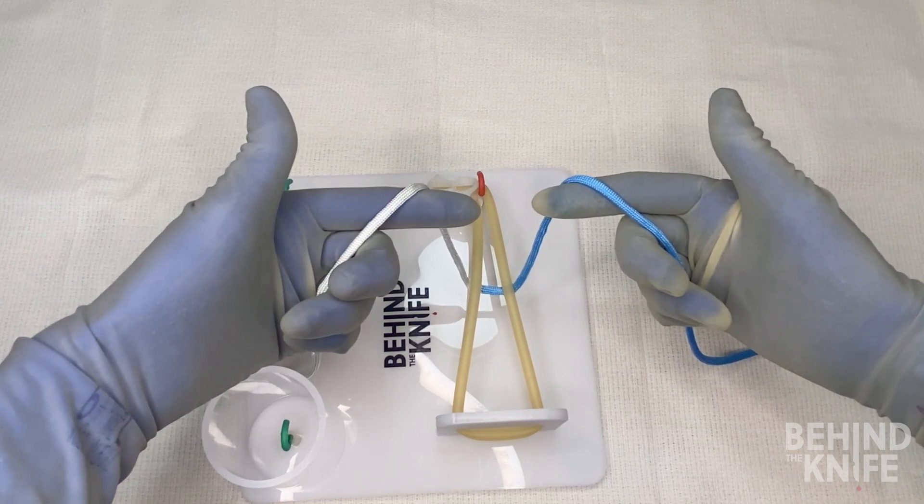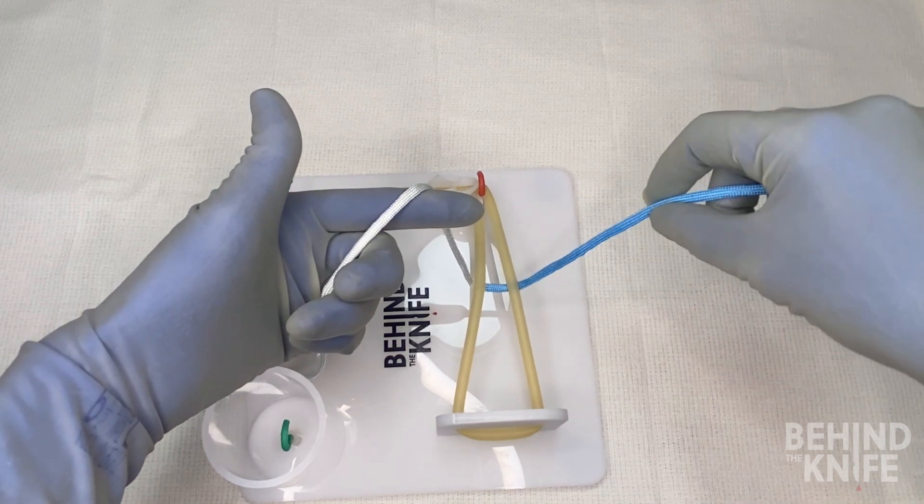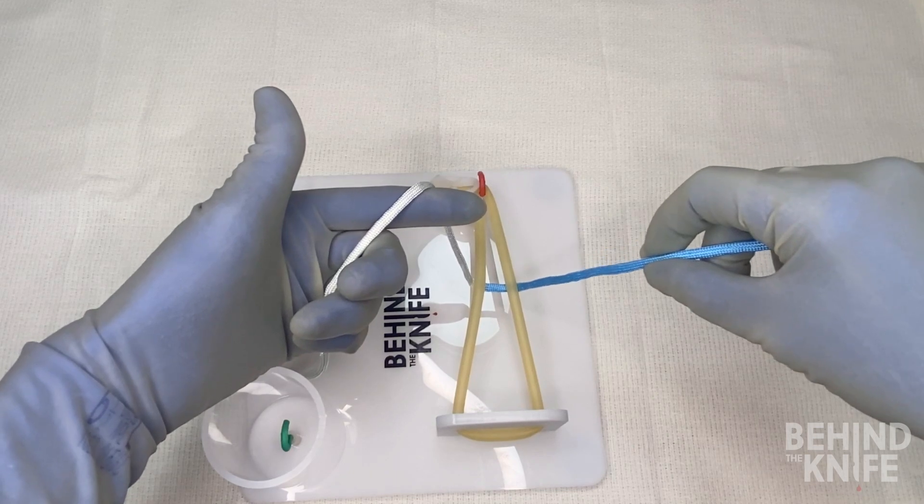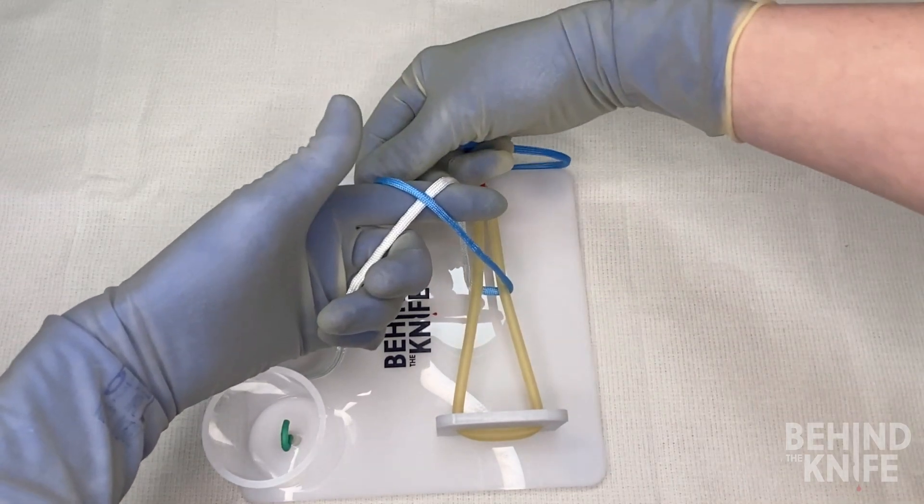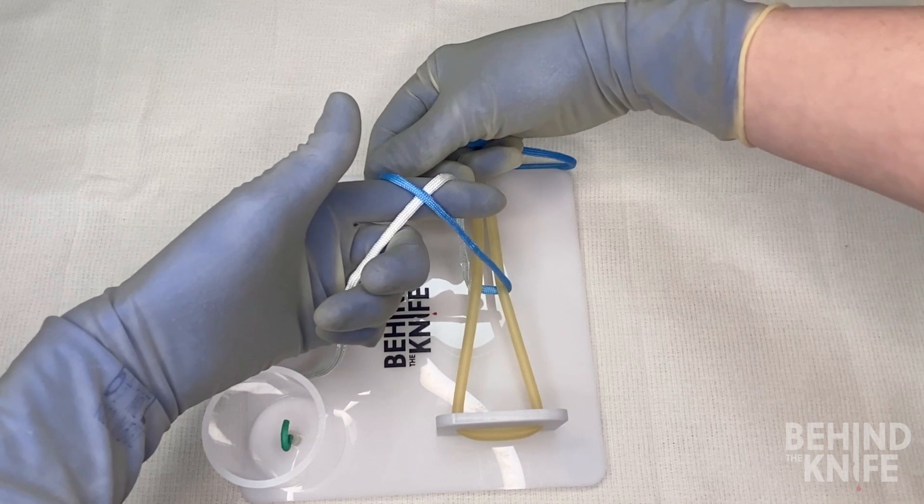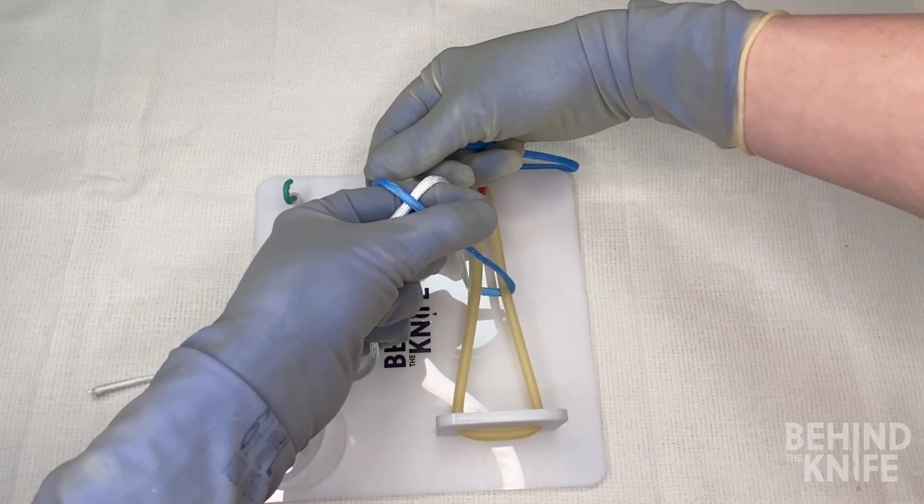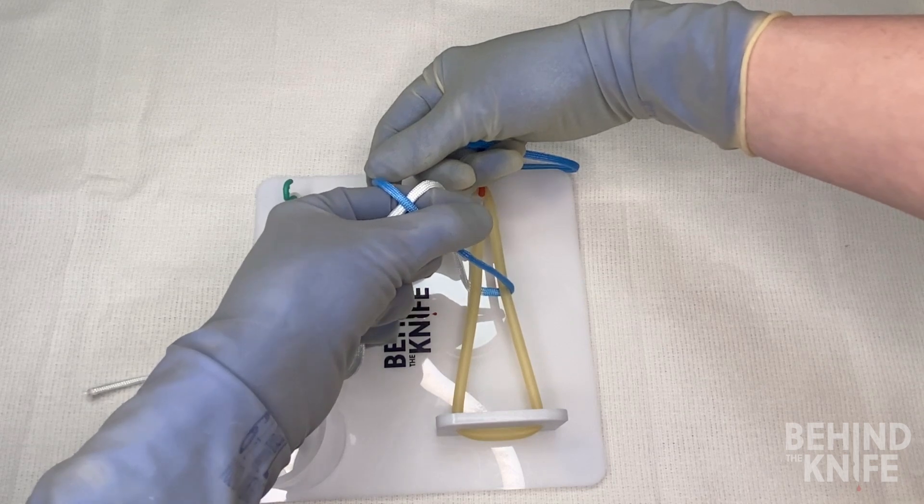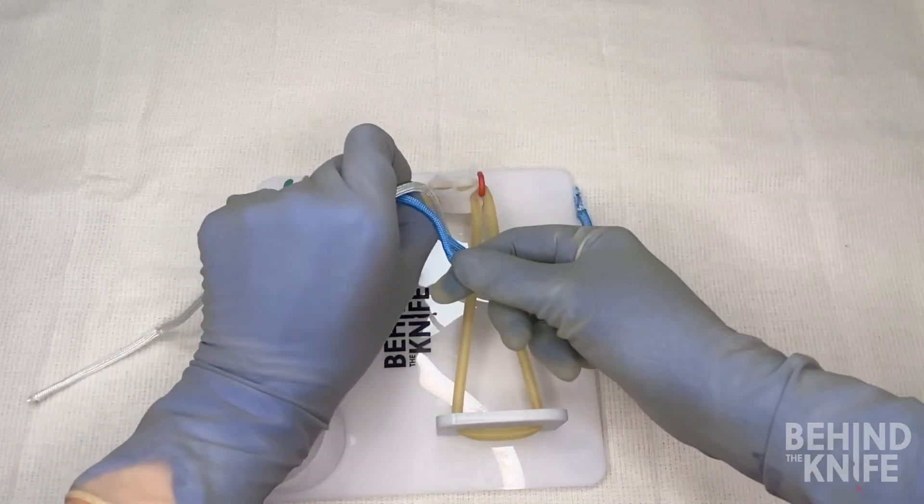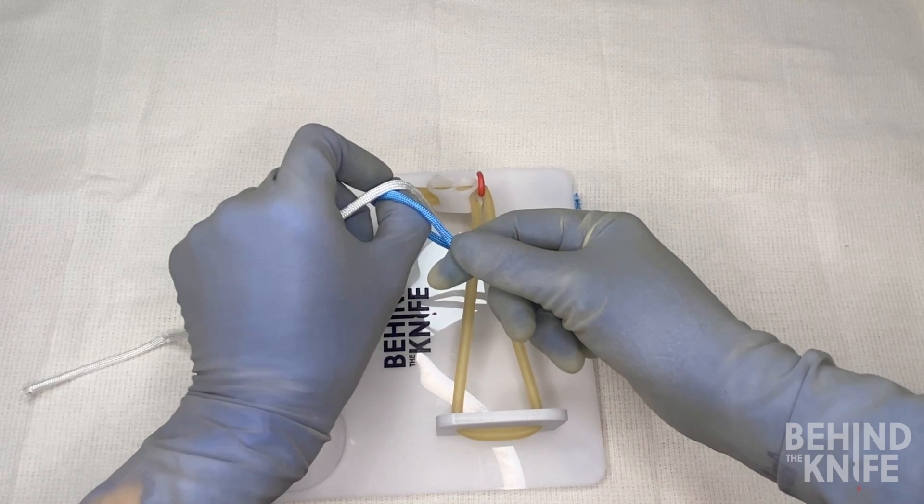So to start, what we'll do is we'll take the blue end of the string that's in our right hand, and we'll cross it over our left index finger to make an X. From here, we're going to pinch our thumb and our index finger together, and what we'll do is we'll rotate our hands, so now our thumb is on the bottom and our index finger is on the top.